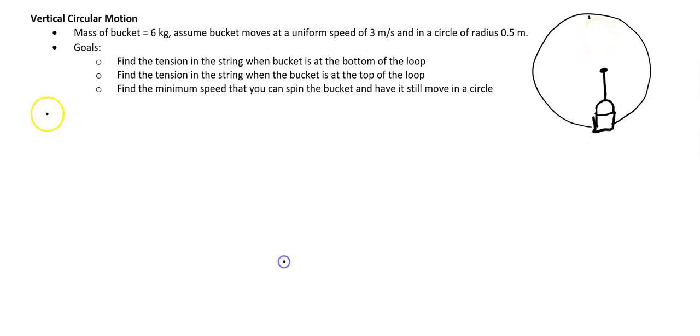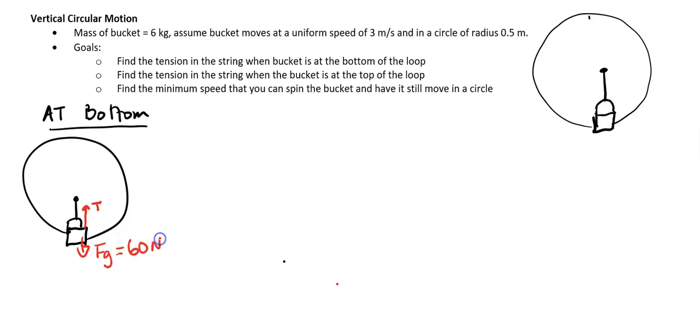So let's go ahead and look at it at the bottom. So when it is at the bottom of the loop, let's go ahead and draw our good old free body diagram. So it's spinning kind of like that. Now let's go ahead and draw your body diagram. Always very important. So we have force of tension going up, and we have force of gravity going down. Force of gravity in this case is going to be 60 newton.